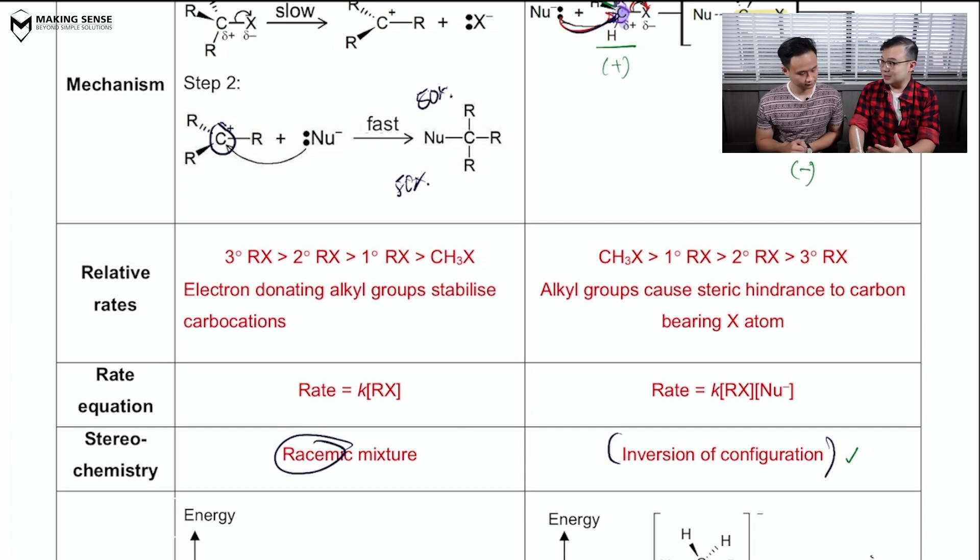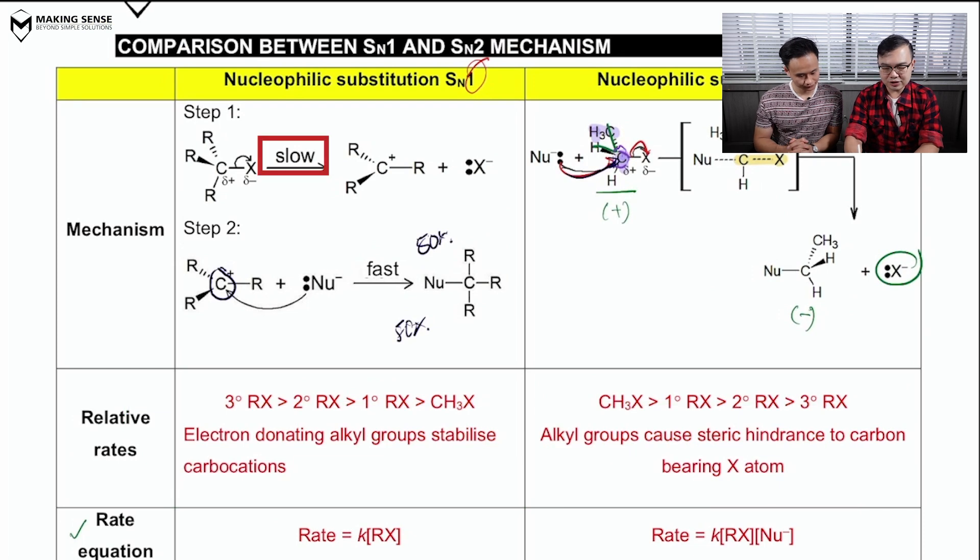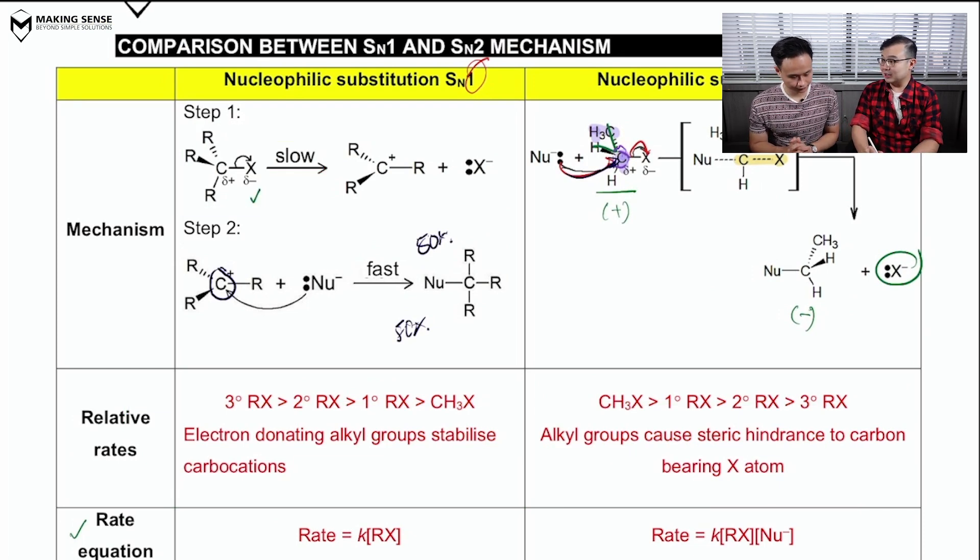Now, let me bring you through the last difference between SN1 and SN2, which is to deal with the thing called a rate equation. Now, I'm asking you to go back to kinetics, right? To recall that in order to deduce a rate equation, we always look at the stoichiometry of the reactants in the slow step. So in the context of SN1, the slow step only uses one reactant. So what do you think the overall order of the reaction will be?